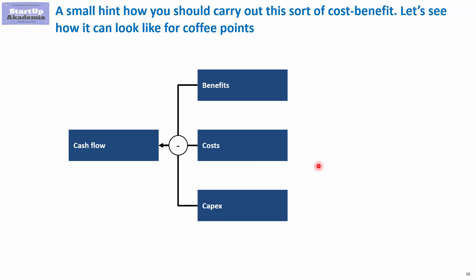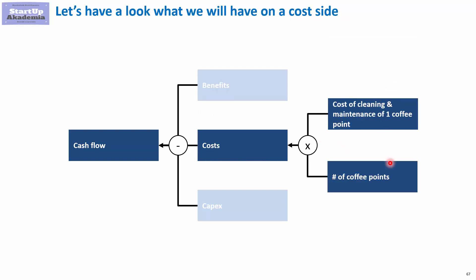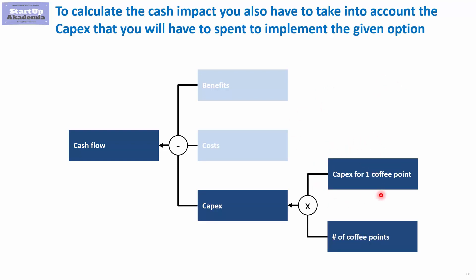For every scenario we will do a cost-benefit analysis and estimate the cash flow generated from each potential improvement. Using the coffee point as an example: the benefit is the reduction in time spent preparing coffee, multiplied by the cost per hour. Costs include cleaning and maintaining the additional coffee points, plus a capex for creating them. Bear in mind that the benefit will not be a direct cash benefit.